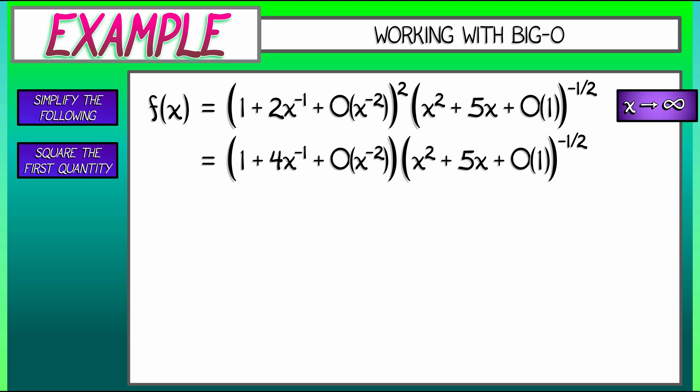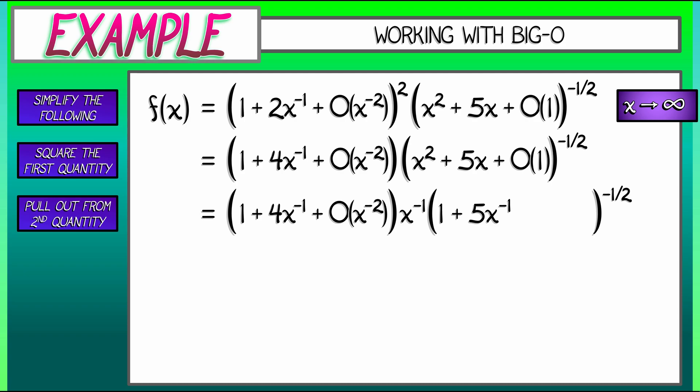All right, next up, we have to work with that second quantity. And the way I'm going to deal with that is I'm going to factor out an x squared from inside the parentheses. When I take that x squared out, I get x squared to the negative one-half, that's x to the negative 1. What's left over is quantity 1 plus 5x to the minus 1 plus Big-O of x to the minus 2. All of that to the negative one-half.